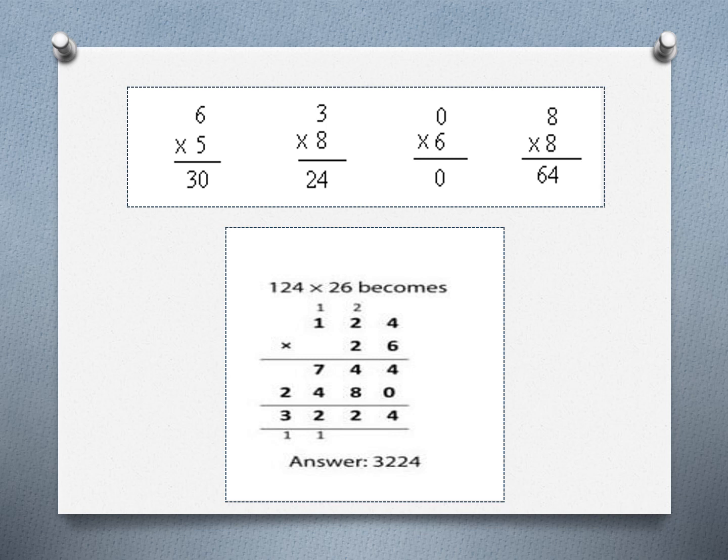Here 6 is the multiplicand and 5 is the multiplier; when we multiply 6 by 5 we get the product 30. Next, 3 is the multiplicand and 8 is the multiplier; when we multiply 3 by 8 we get the product 24. When we multiply 0 by 6 we get 0, and 8 by 8 we get 64. Finally, 124 is the multiplicand and 26 is the multiplier; multiply 124 by 6 to get 744, then multiply 124 by 2 to get 248, and after adding both values we get the product 3224.